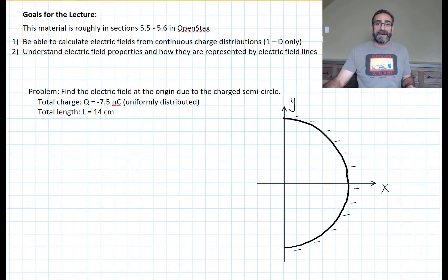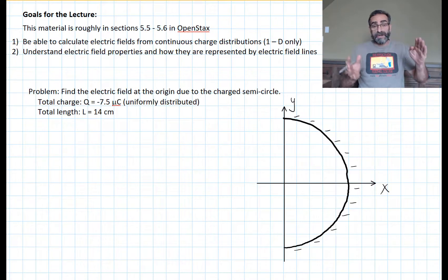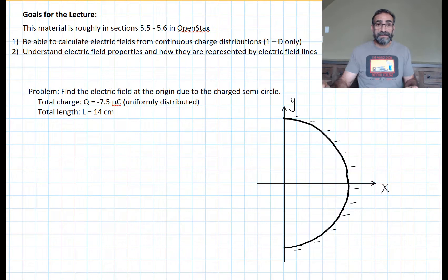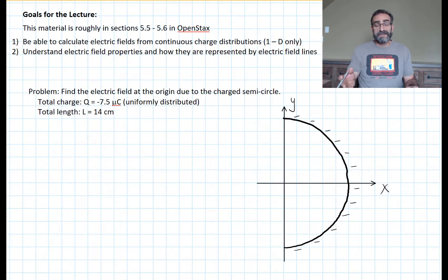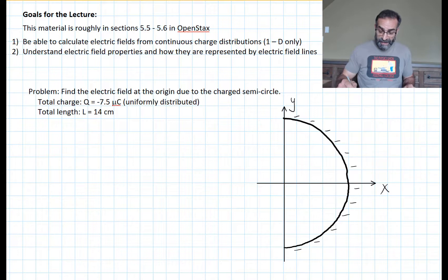In the last video we found the electric field from a line of charge. Now we're going to take that line and bend it into a curved arc length. It's still a one-dimensional charge distribution; the charge is still uniformly distributed, but over a curved arc. We're finding the electric field at the center of curvature, so the process is the same — we pick a little tiny element of charge and call that dq.